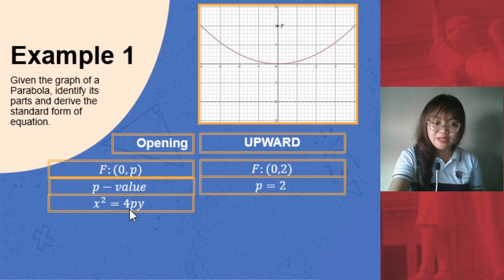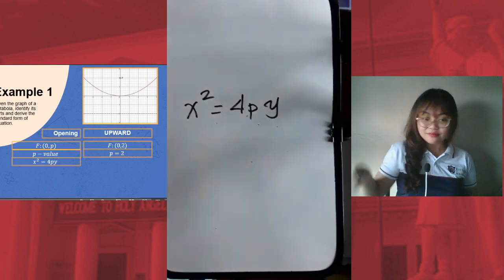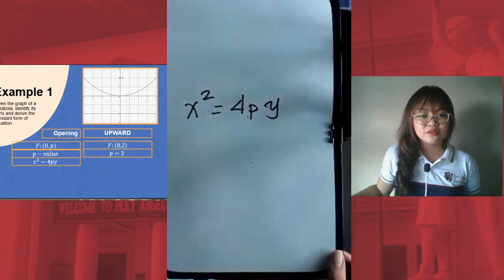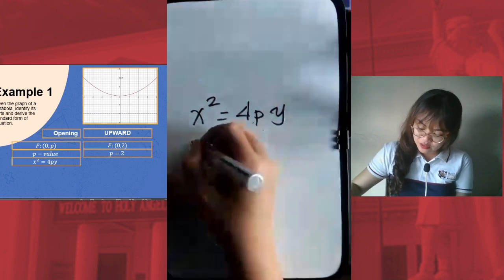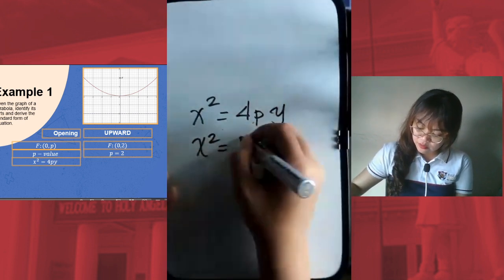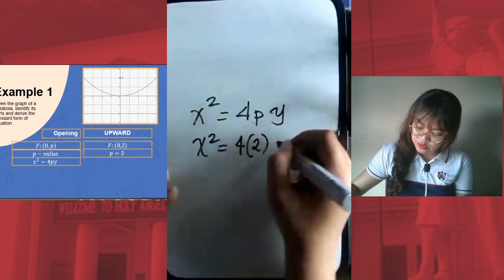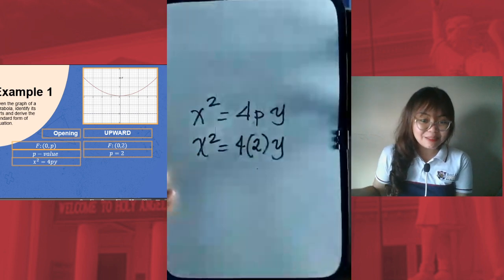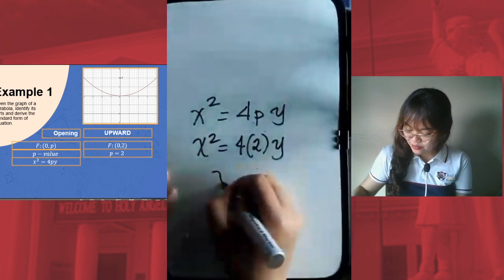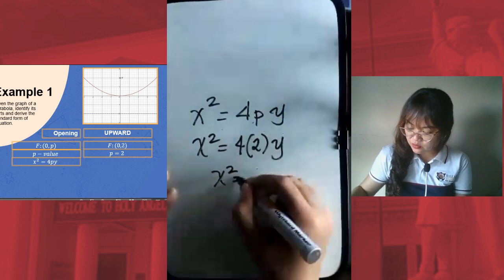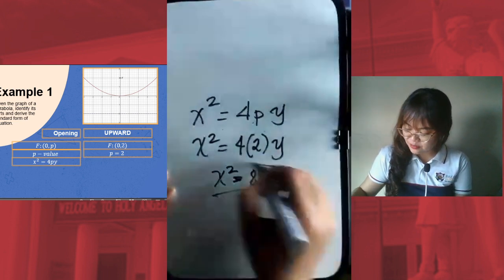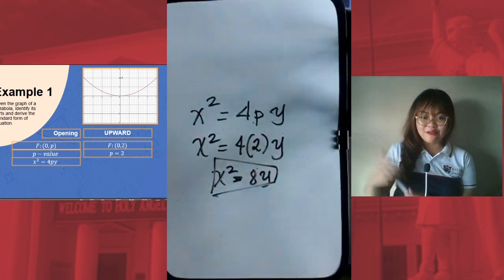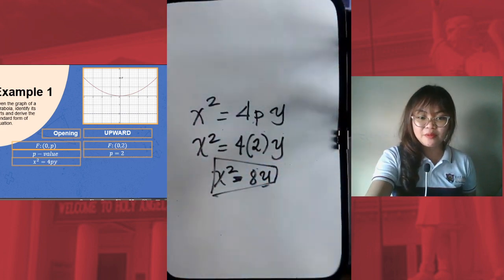All we have to do is substitute the value of p into this equation. We have x² = 4py. Substitute the value of p which is 2, so we have x² = 4 times 2y. Simplify this further and we have x² = 8y. This will now be the equation for our parabola.